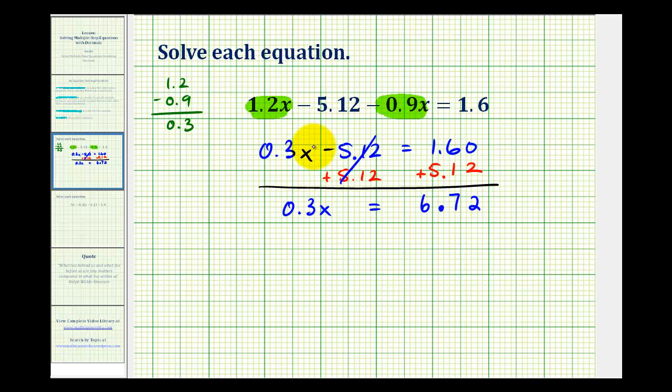Well 0.3x means 0.3 times x, so to undo this multiplication, we'll have to divide both sides by 0.3. 0.3 divided by 0.3 is equal to 1, so this simplifies to 1x or just x.